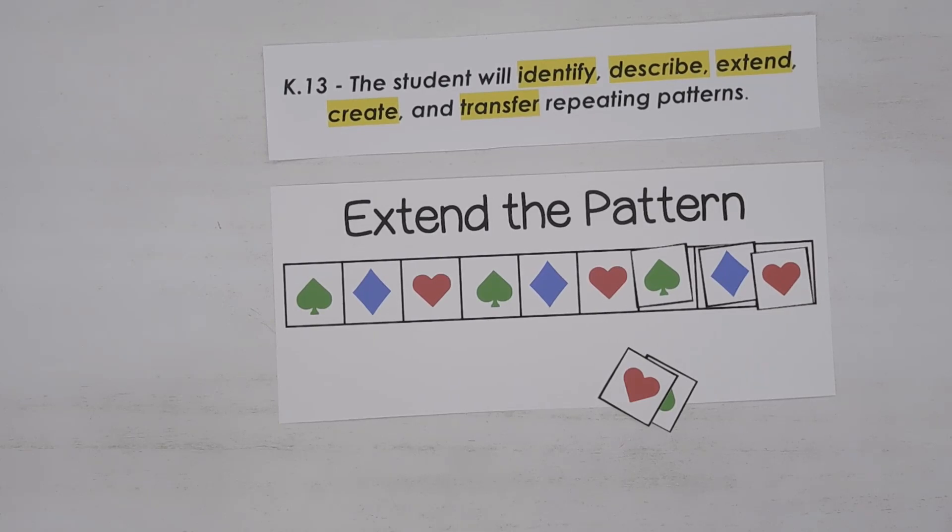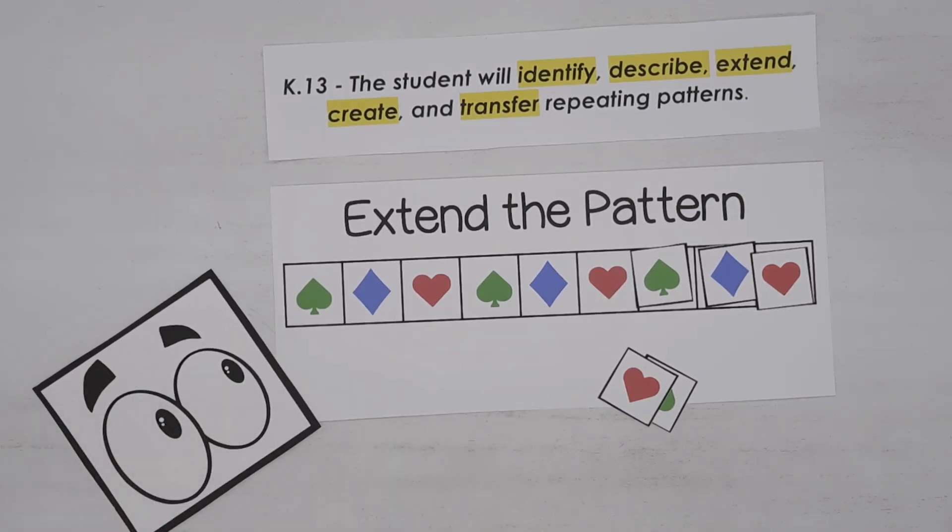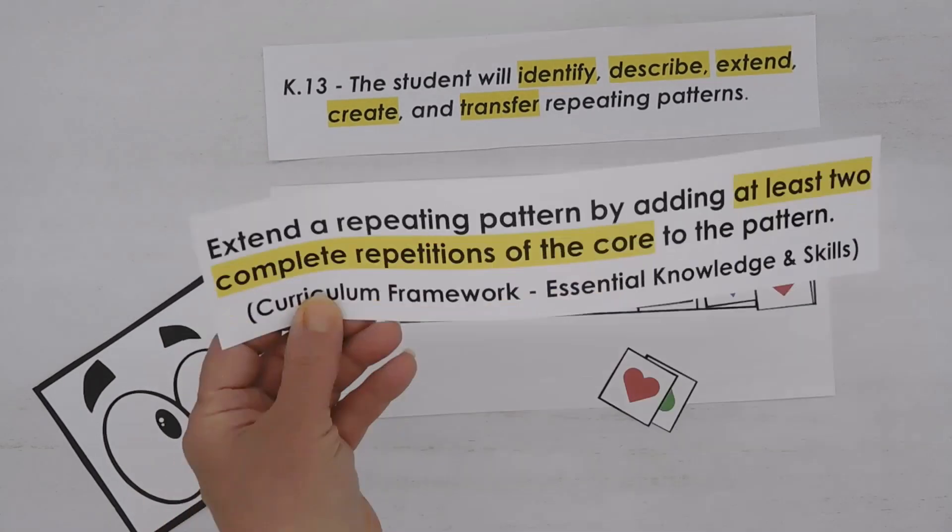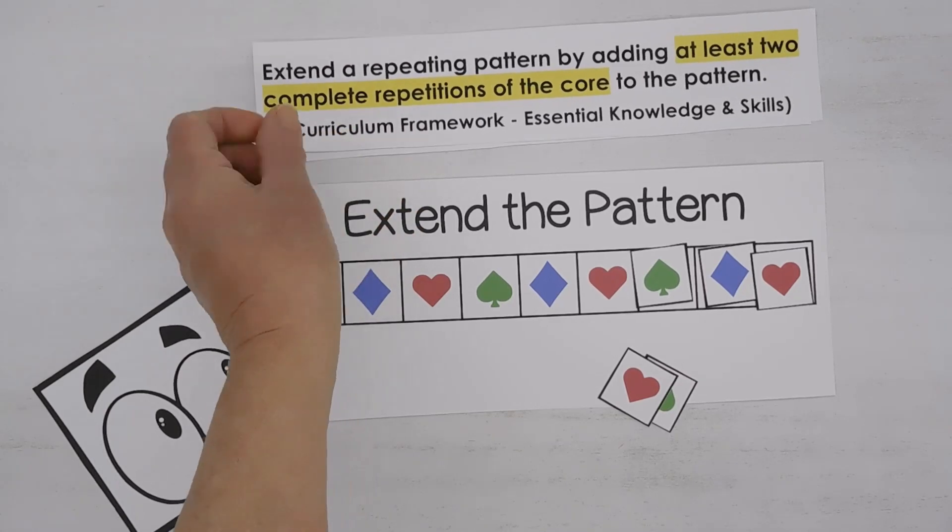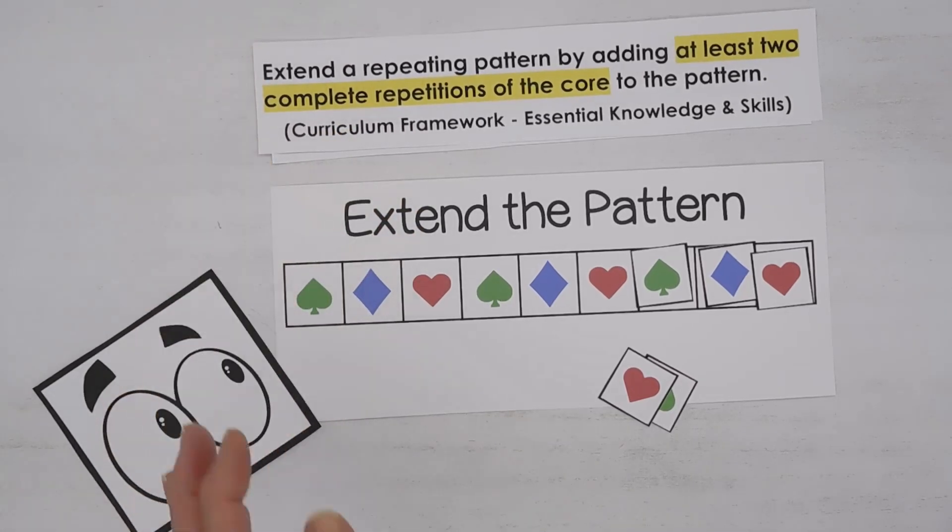But I actually have not followed the curriculum framework. So this activity is going to get my eyebrows raised as well. Well, let's look at what the curriculum framework says. It says to extend a repeating pattern by adding at least two repetitions of the core to the pattern. Well, we didn't do that. We only extended it by one repetition.